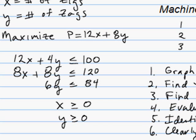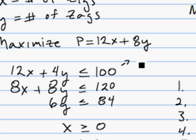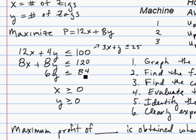One more hint as we try to graph these: notice these numbers get kind of big, but the first inequality has a common factor of four. So that inequality is really equivalent to 3x plus y less than or equal to 25 — that'll make it a little easier to work with. Similarly, look for common factors in the other inequalities to make the problems a little easier to deal with.